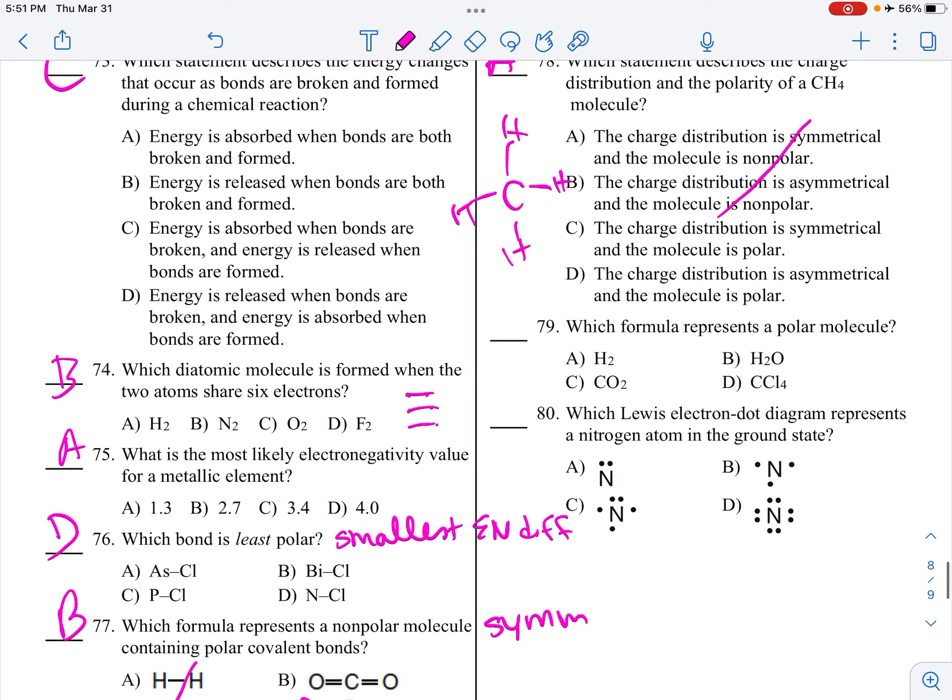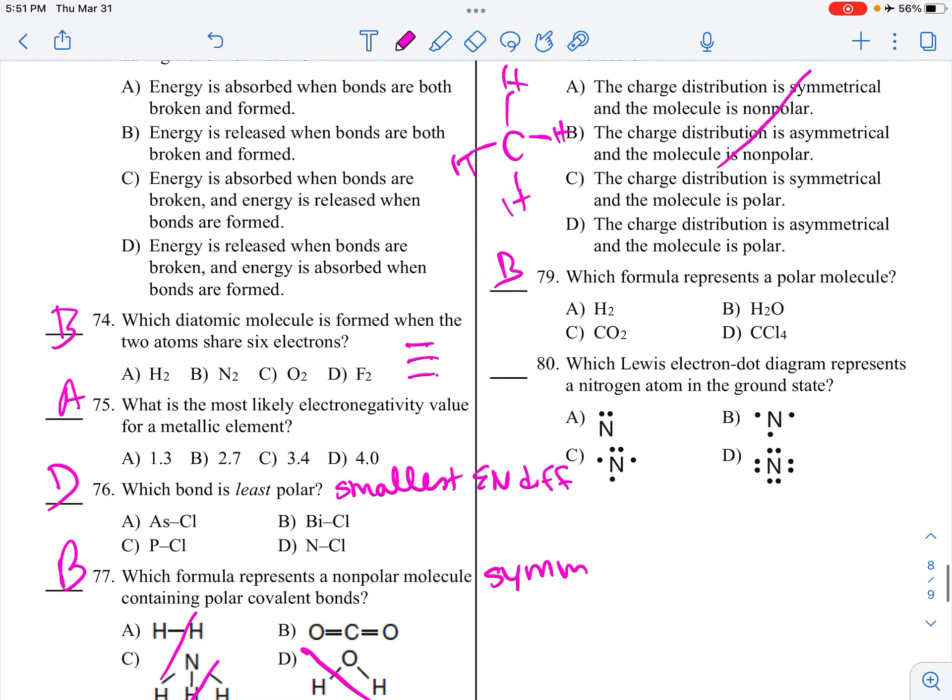Polar molecule is asymmetrical. I've got to hurry this up. Nitrogen, 1, 2, 3, 4, 5. It's going to be choice C. Sean, can you say goodbye? Goodbye.